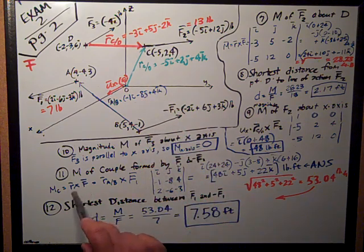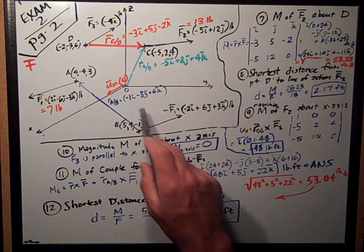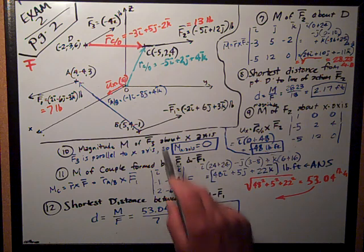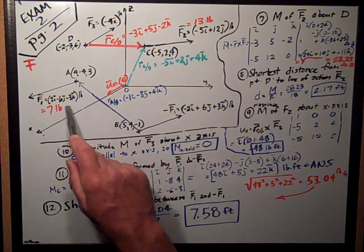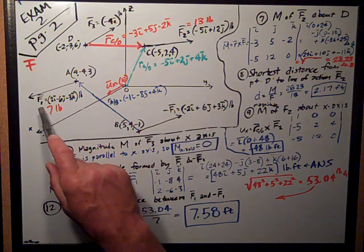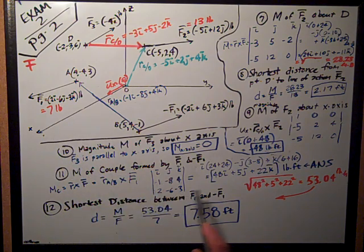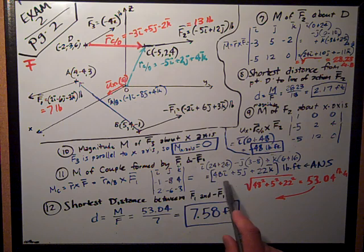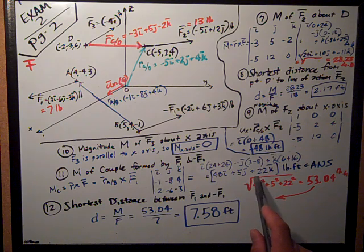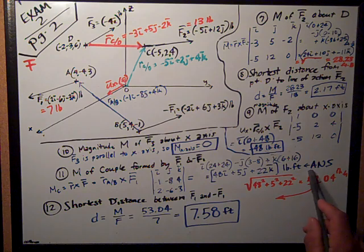I plug that into a matrix, i, j, and k, unit on the top, position in the middle, which is that negative 1, negative 8, and 4 from the position vector. The force components of f1, 2, negative 6, negative 3. I solve the matrix, and I come up with 48i plus 5j plus 22k, pound-feet. That is my answer.